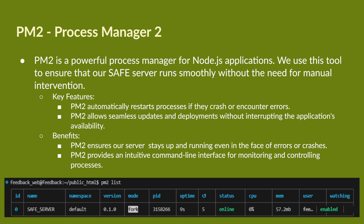Here are some key features that PM2 has. PM2 will automatically restart the process if they crash or encounter any errors. PM2 also allows seamless updates and deployment without interruption to the application's availability. By using PM2, we get benefits such as ensuring that our servers stay up and running even in the face of errors or crashes. PM2 also provides an intuitive command line interface for monitoring and controlling the process. Using the PM2 list command, it will show the ID of the server, the name, how long the server has been up and running, how many times it has been restarted, and also the CPU and memory usage to help monitor the process.